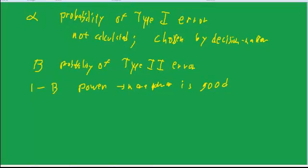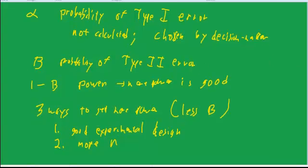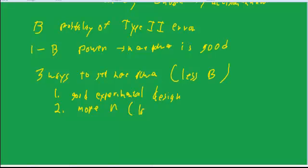And there are basically three ways to get more power. The first is good experimental design. We won't really talk about specifics on that because the types of issues there tend to be pretty advanced. Second is higher sample size. So more n, larger sample. That will give you more power.